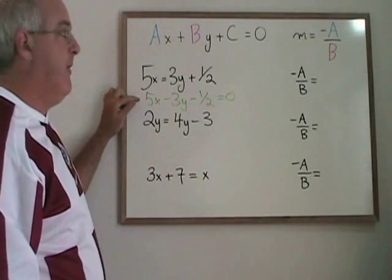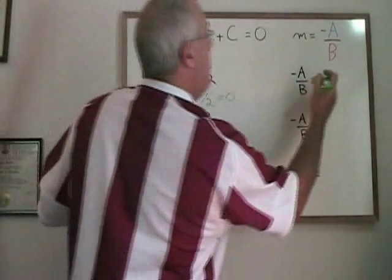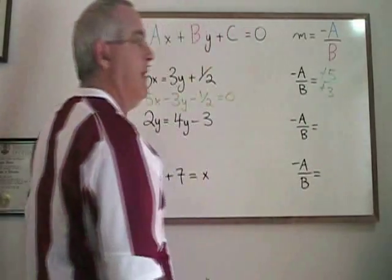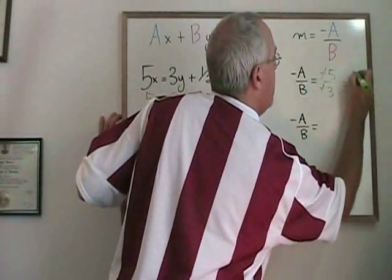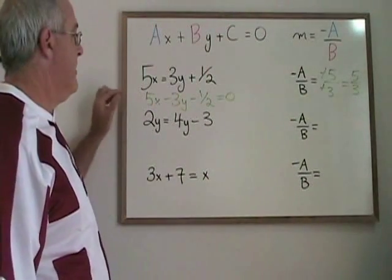My a is therefore 5. My b is negative 3. Negative a over b becomes negative 5 over negative 3. The two negative signs cancel, and 5 thirds is the slope of this straight line.